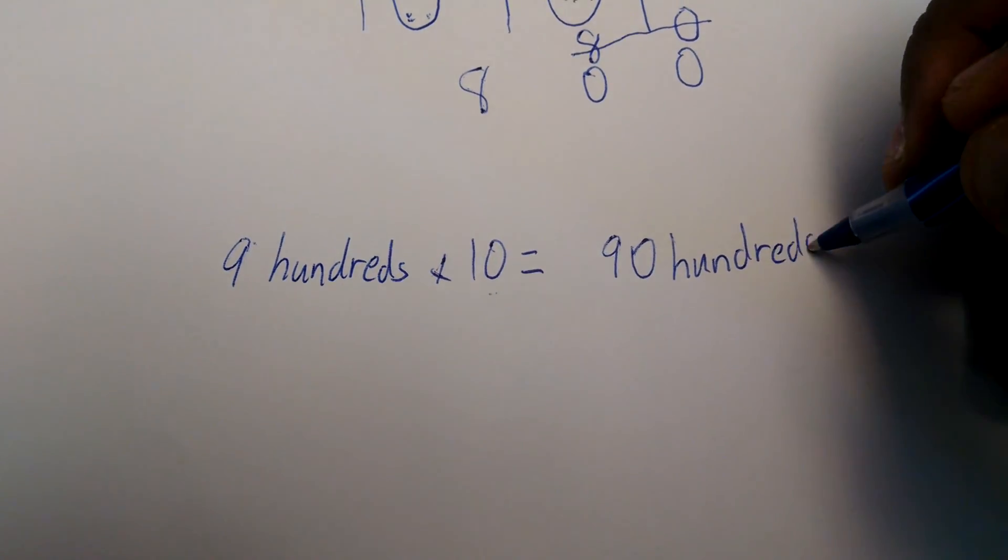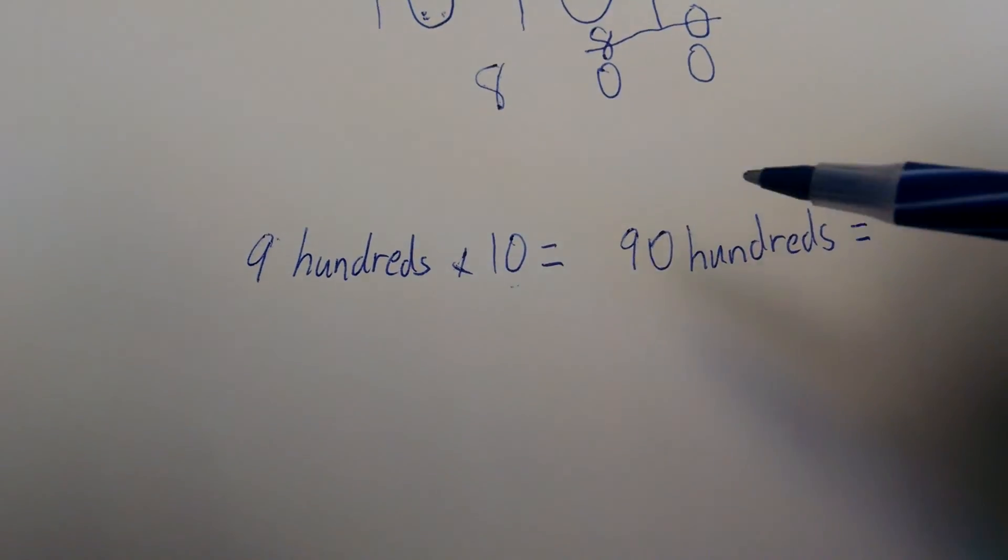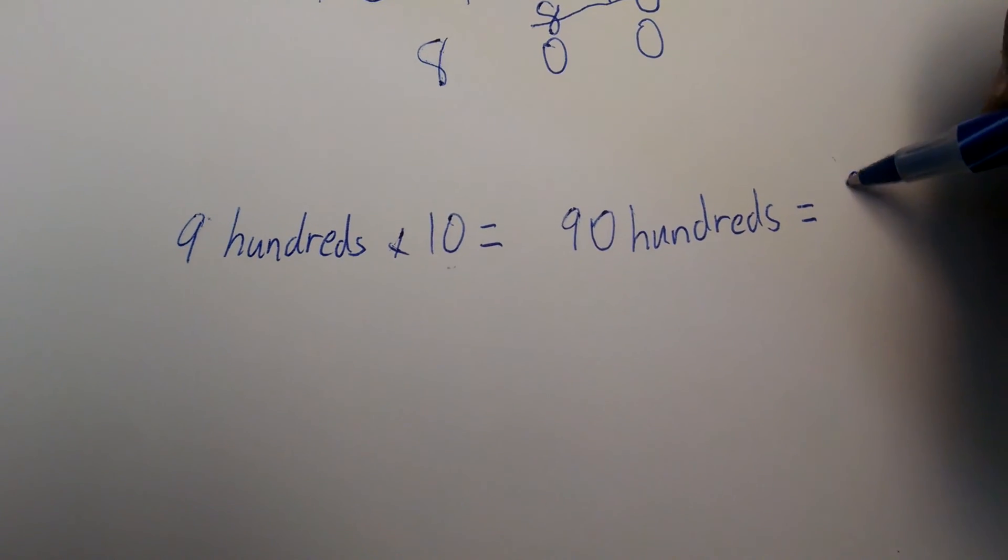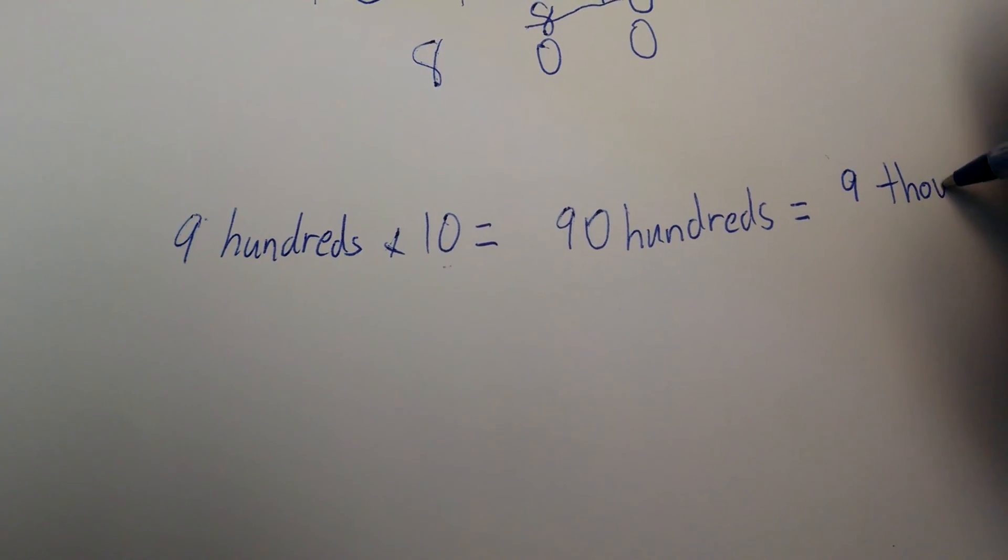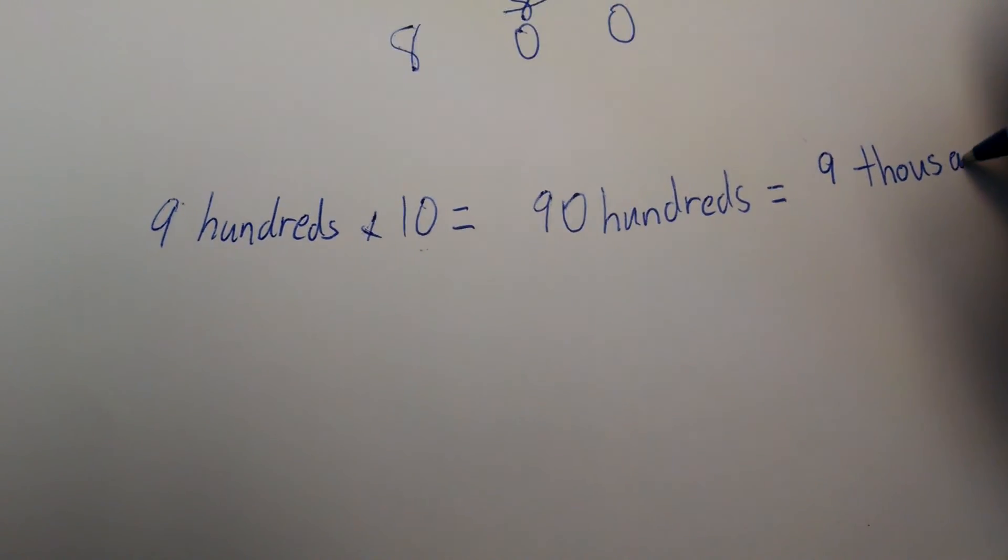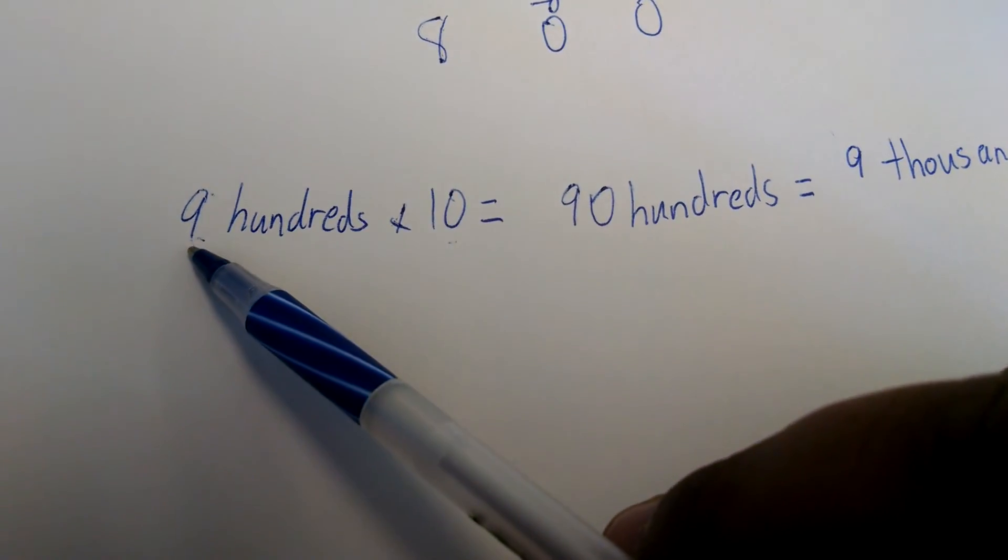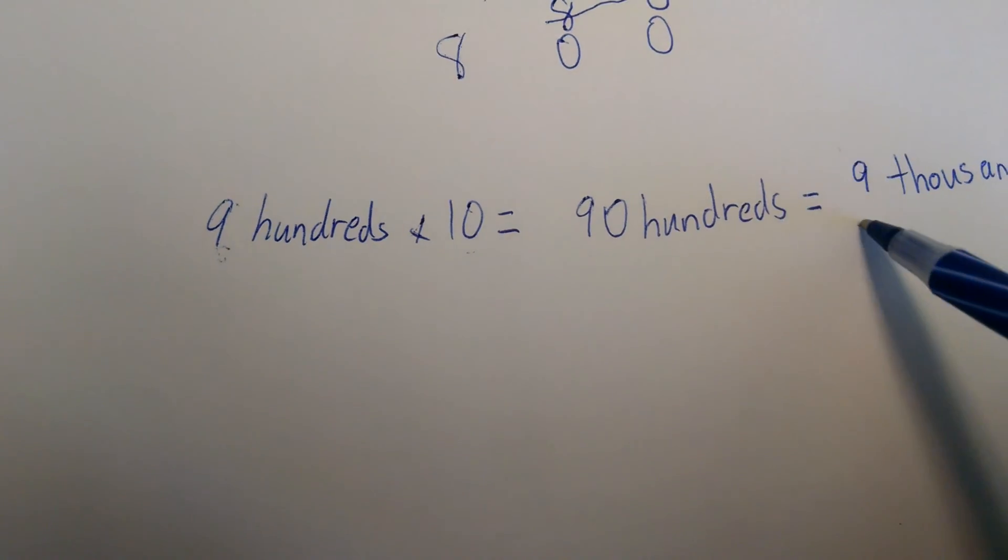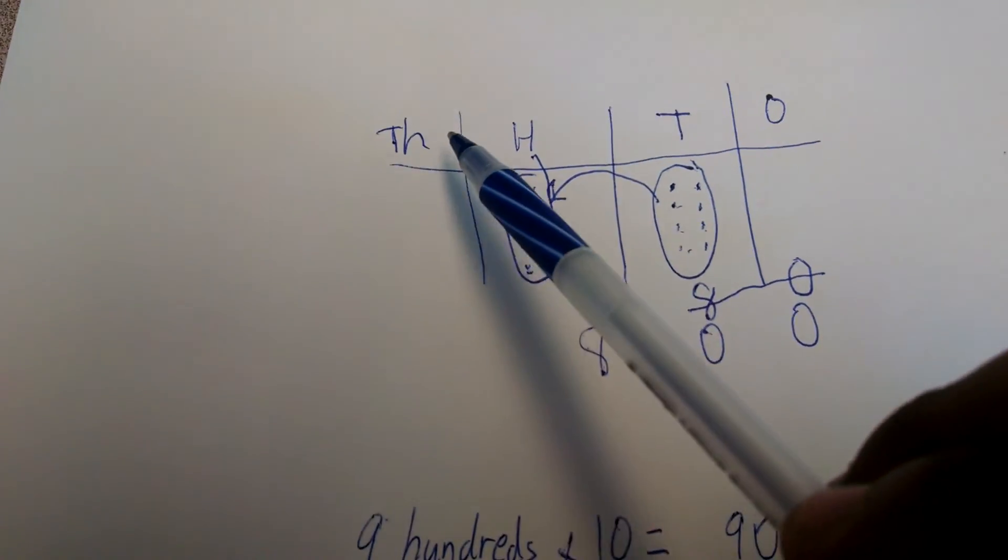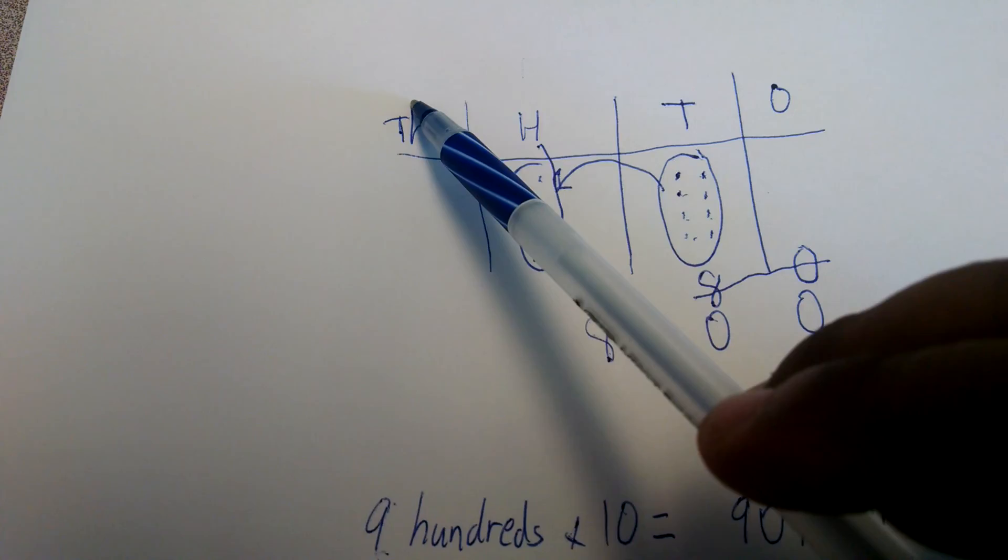And 90 hundreds is equal to 9 thousands, because the 9 has now shifted one place up. So here's my chart: it was 9 hundreds, it shifted one place up to the thousands. So that's the concept.